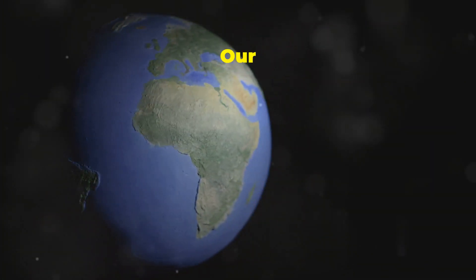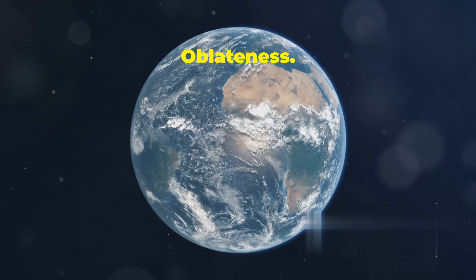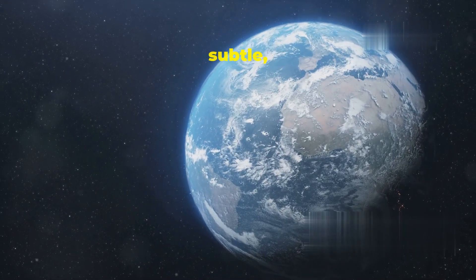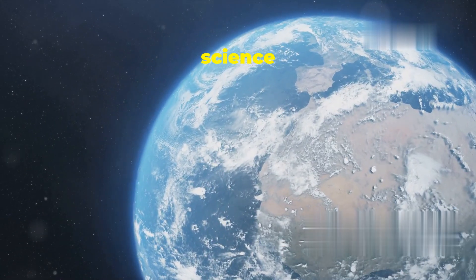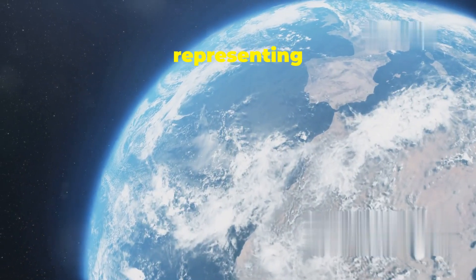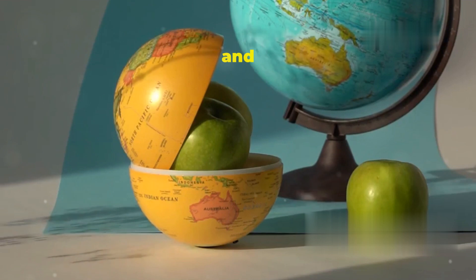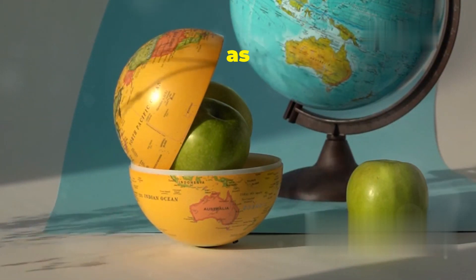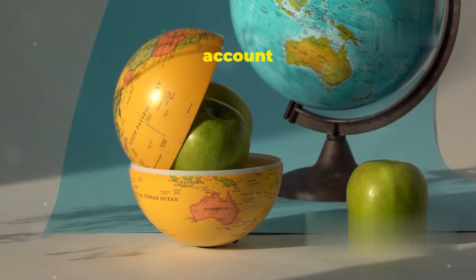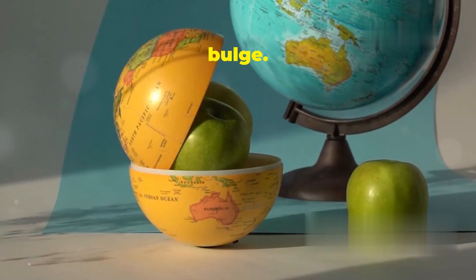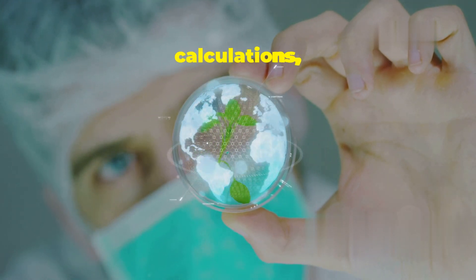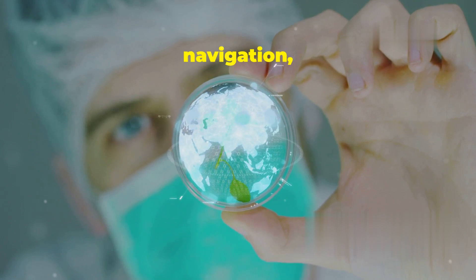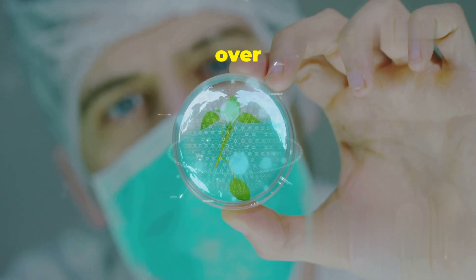Earth's oblateness, while seemingly subtle, has profound implications for various fields, most notably geodesy, the science of accurately measuring and representing Earth. Traditional maps and globes, often depicting Earth as a perfect sphere, fail to account for the equatorial bulge. This discrepancy can lead to inaccuracies in distance calculations, land surveying and navigation, especially over long distances.